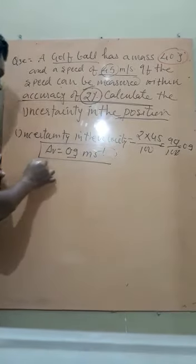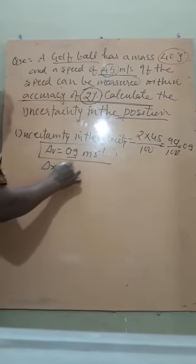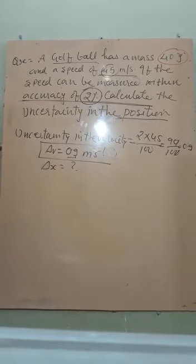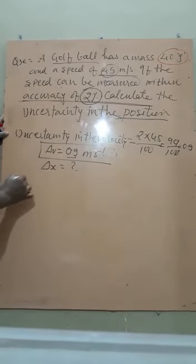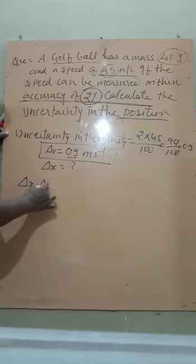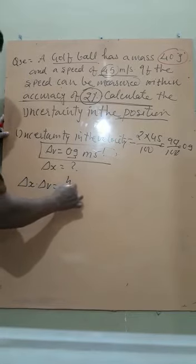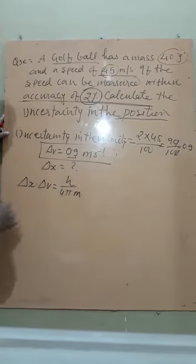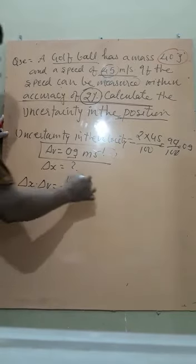Now we have to find del X. Del X into del V is equal to h upon 4π into m. What is m? Mass of electron. Here m is the mass of electron which is 9.1 into 10 to the power minus 31.